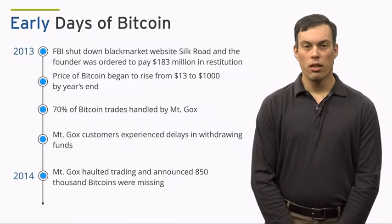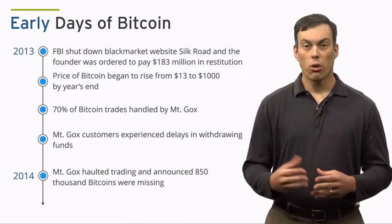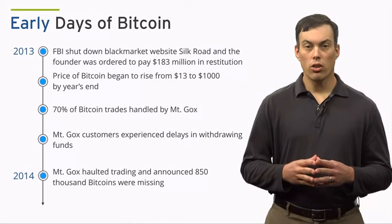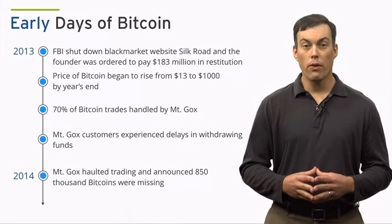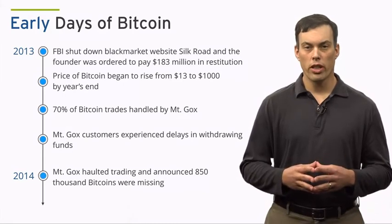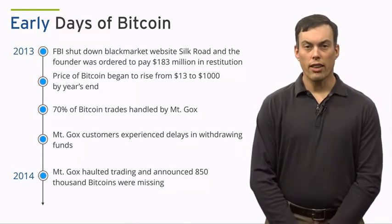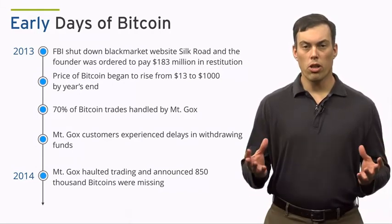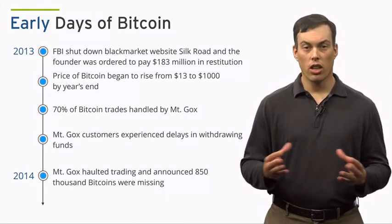Finally, in February of 2014, Mt. Gox halted all withdrawals and less than two weeks later, it suspended trading, closed its website and exchange service, and filed for a form of bankruptcy protection under Japanese law to allow courts to seek a buyer. Mt. Gox then announced that around 850,000 of their customers' Bitcoins, valued at roughly $480 million at the time, were missing and had likely been stolen. This checkered past makes Bitcoin and other cryptocurrencies' subsequent price increases and mass adoption all the more remarkable. I should also note that the problems highlighted by Silk Road and Mt. Gox have not gone away.